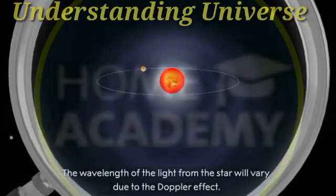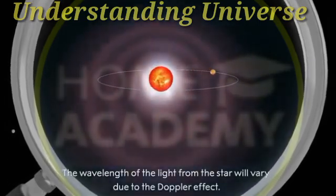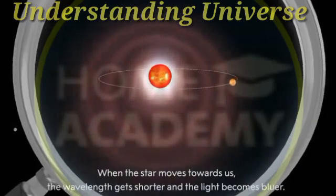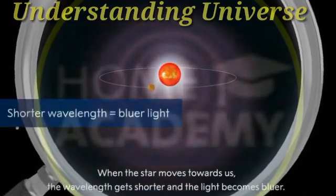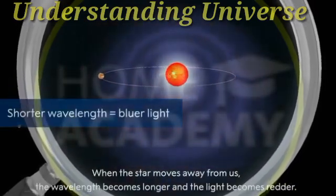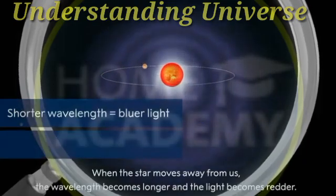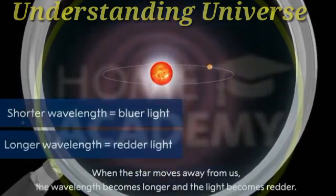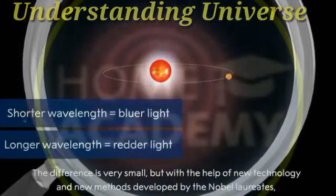The wavelength of light from the star will vary due to the Doppler effect. When the star moves towards us, the wavelength gets shorter and the light becomes bluer. When the star moves away from us, the wavelength becomes longer and the light becomes redder.